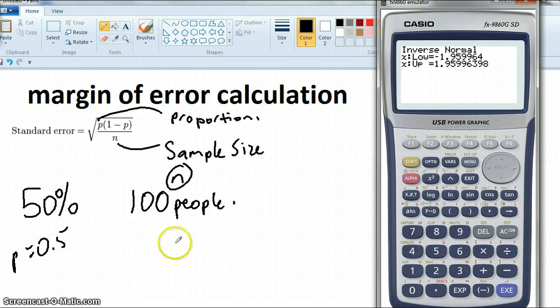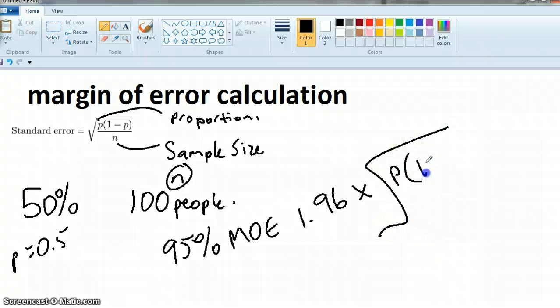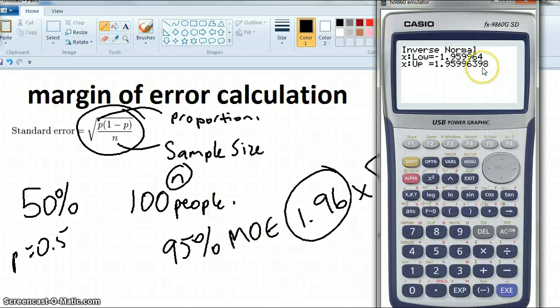Now, a 95% confidence interval, or 95% margin of error, is 1.96 times the square root of p, 1 minus p, all over n. So we're just using the standard error, but we're timesing it by the z-score. Okay, so the z-score is the 1.96. So that's where that number comes from.